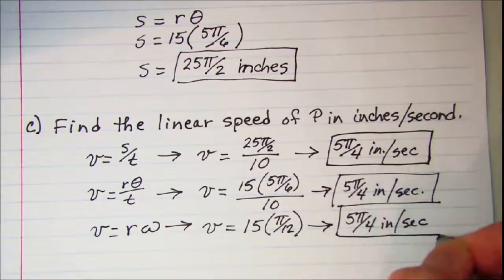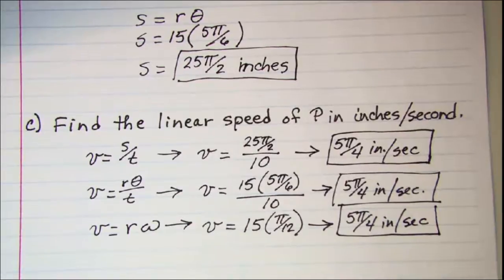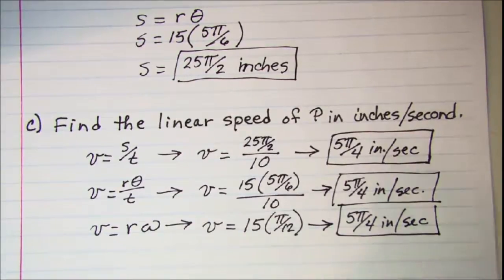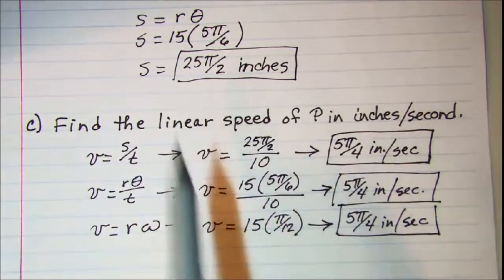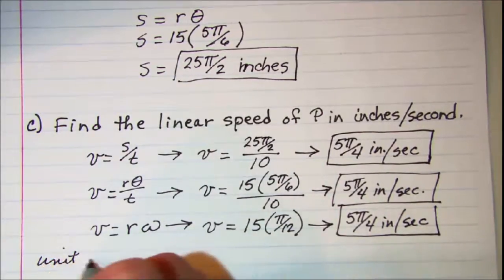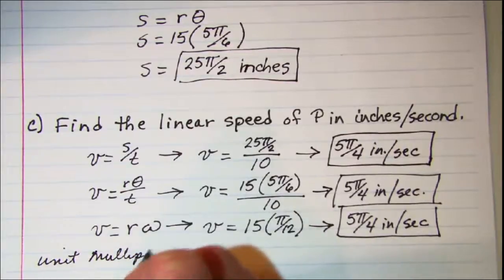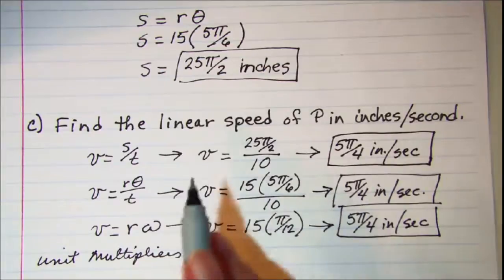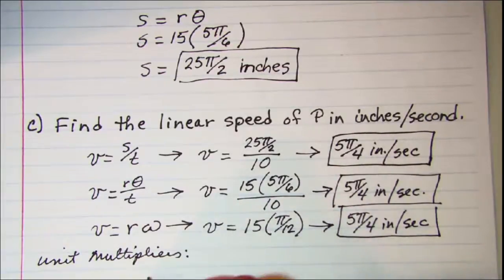Let me also show you unit multipliers. If we chose to use unit multipliers with our angular speed, so let me make a note that this is unit multipliers. We start with our angular speed of π over 12.